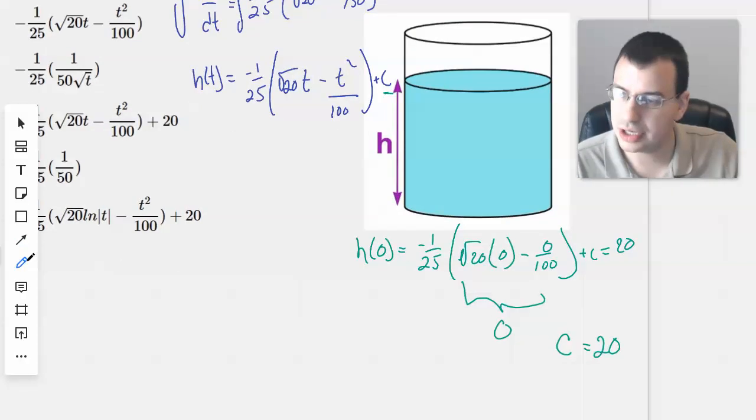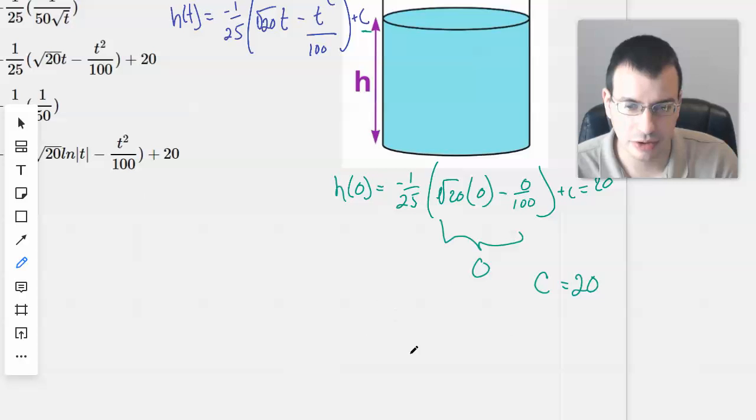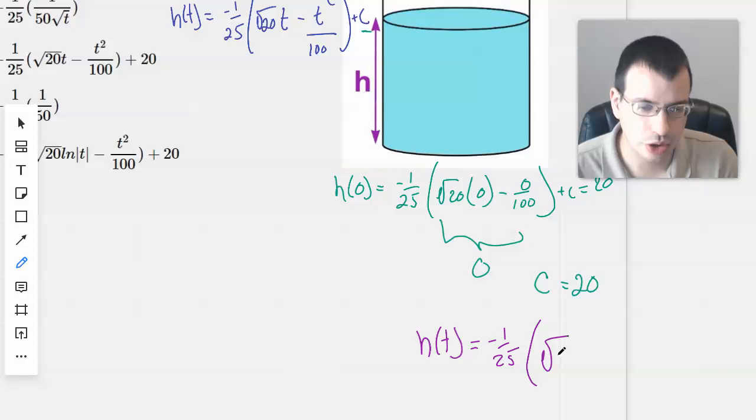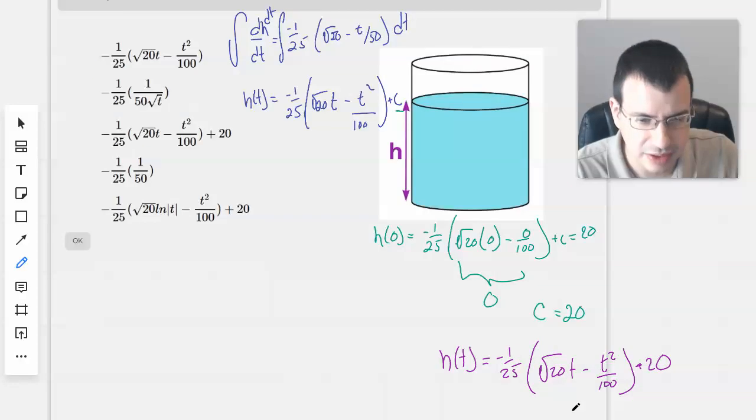Okay, so now we can just rewrite it and solve for the entire equation. We get H(t) equals negative 1 over 25, square root of 20T minus T squared over 100 plus 20. That's not too bad.